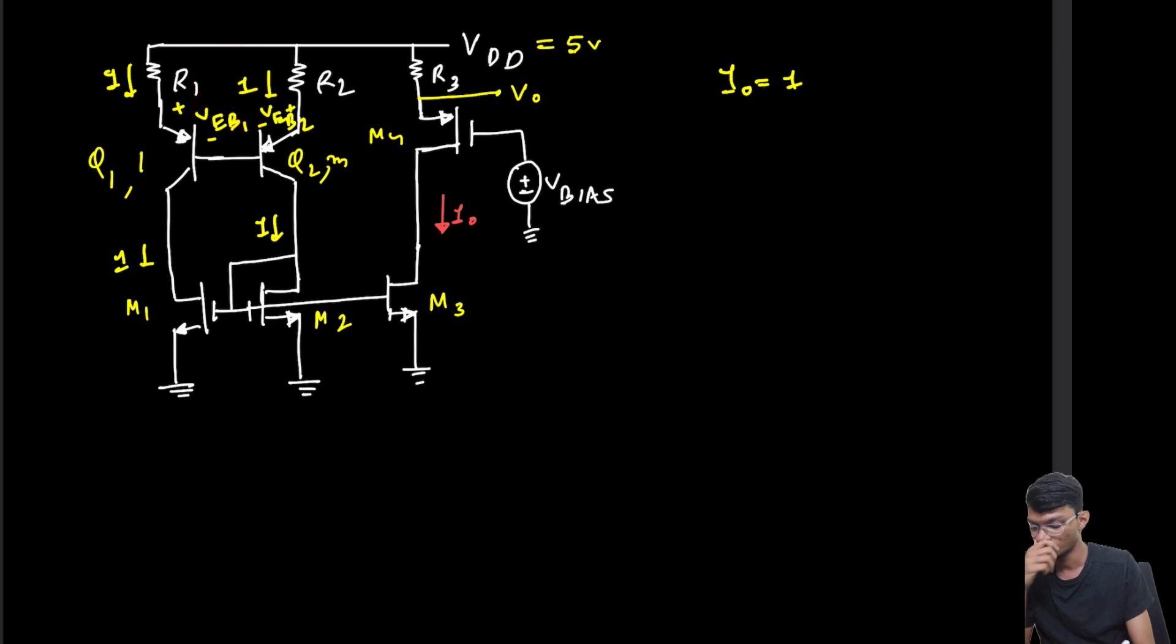So if I write the KVL across this loop, basically -VEB1 - IR1 + IR2 + VEB2 = 0.